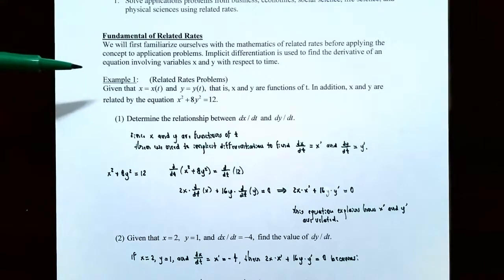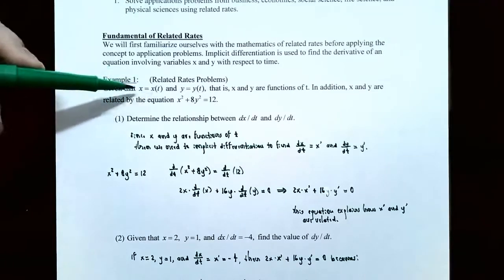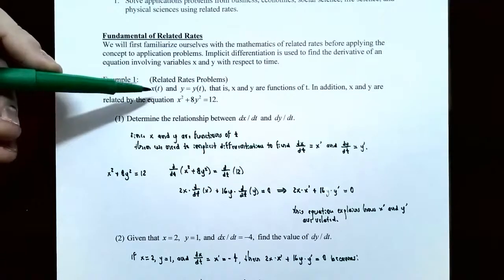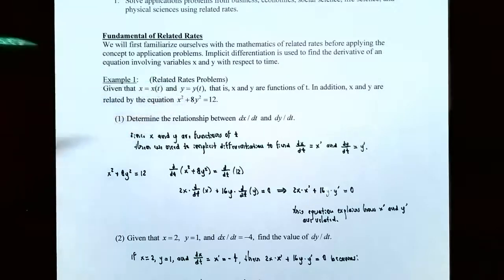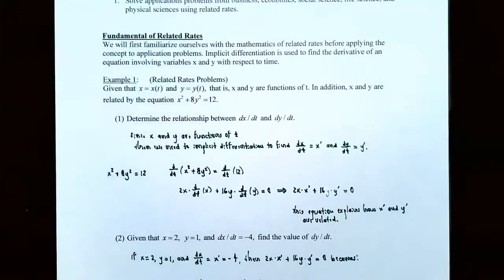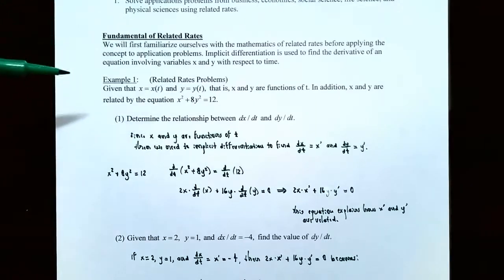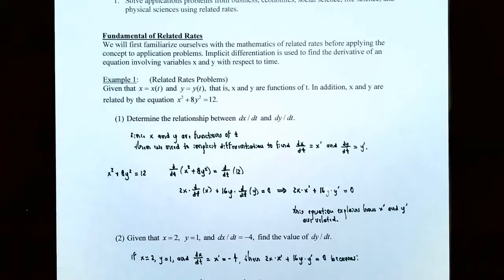Example one: related rates problems. Given that x is x of t and y is y of t — so x and y are both functions of time t — and x and y are related by the equation x squared plus 8y squared equals 12.